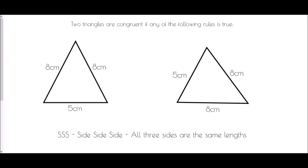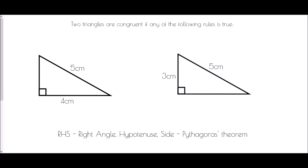Next is Side Side Side — SSS — where all three sides are the same length. If all three sides are the same length, the triangles must be the same. Here we have sides of eight, eight, and five, and the other triangle also has eight, eight, and five — so they must be the same triangle, with the same size and same angles.